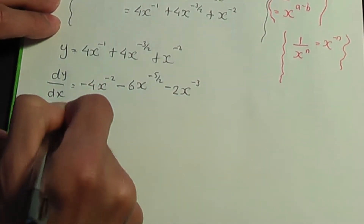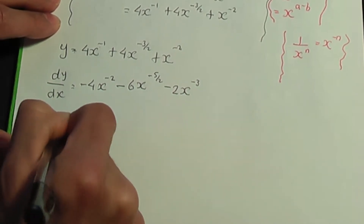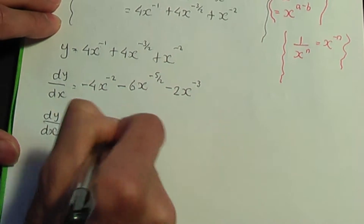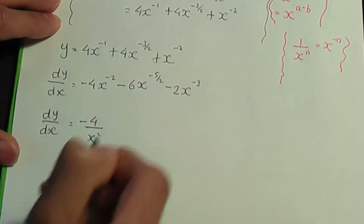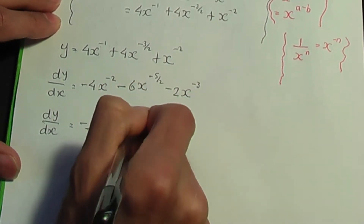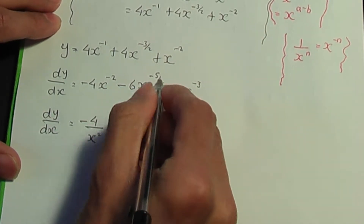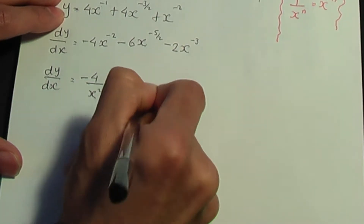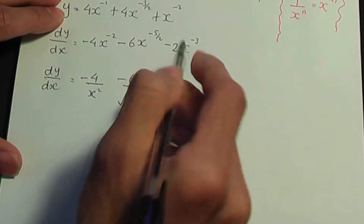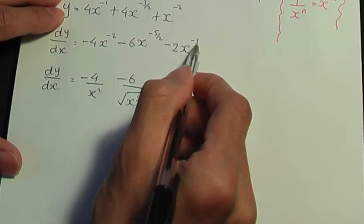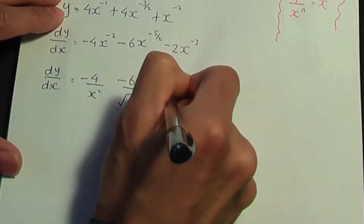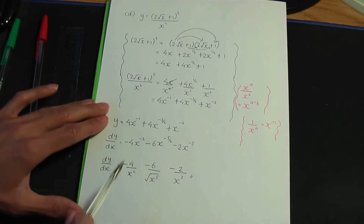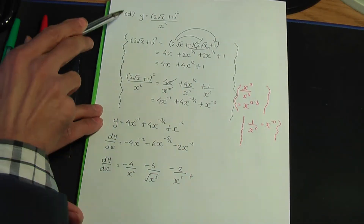So I can rewrite the answer as dy/dx. The first term: minus 4 over x². Minus 6, where x to the minus 5 over 2 is the same as 1 over the square root of x to the 5. And minus 2x to the minus 3 is the same as minus 2 over x cubed. So this is the solution to part D.